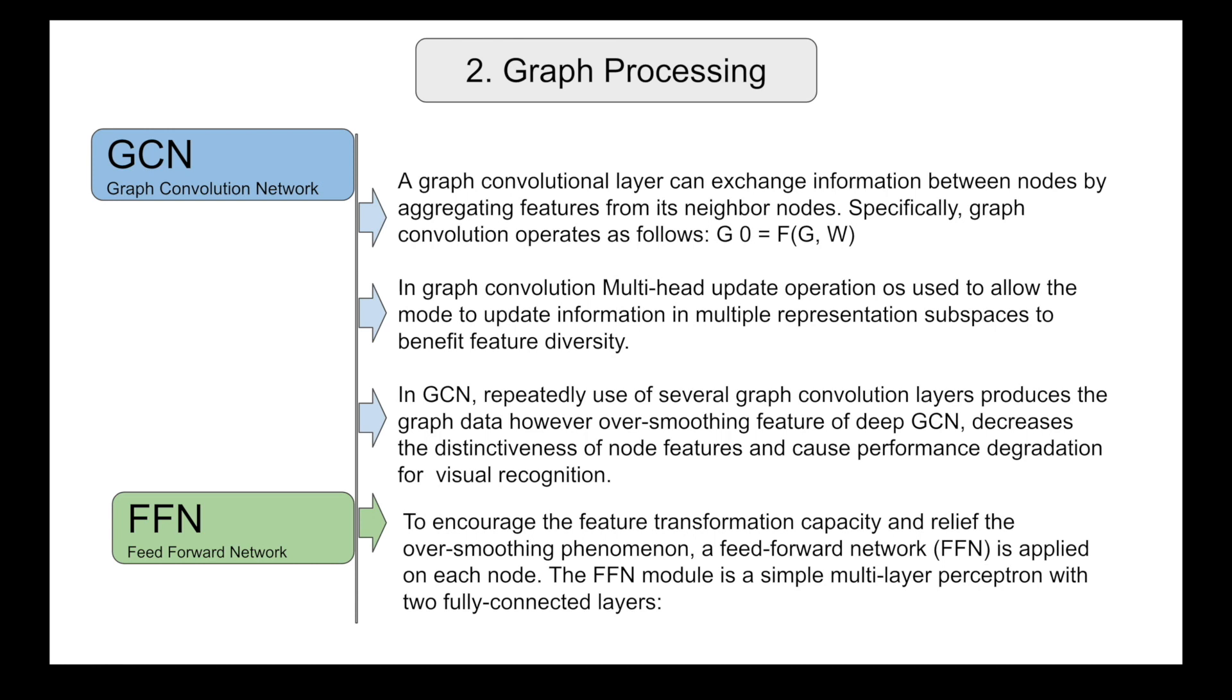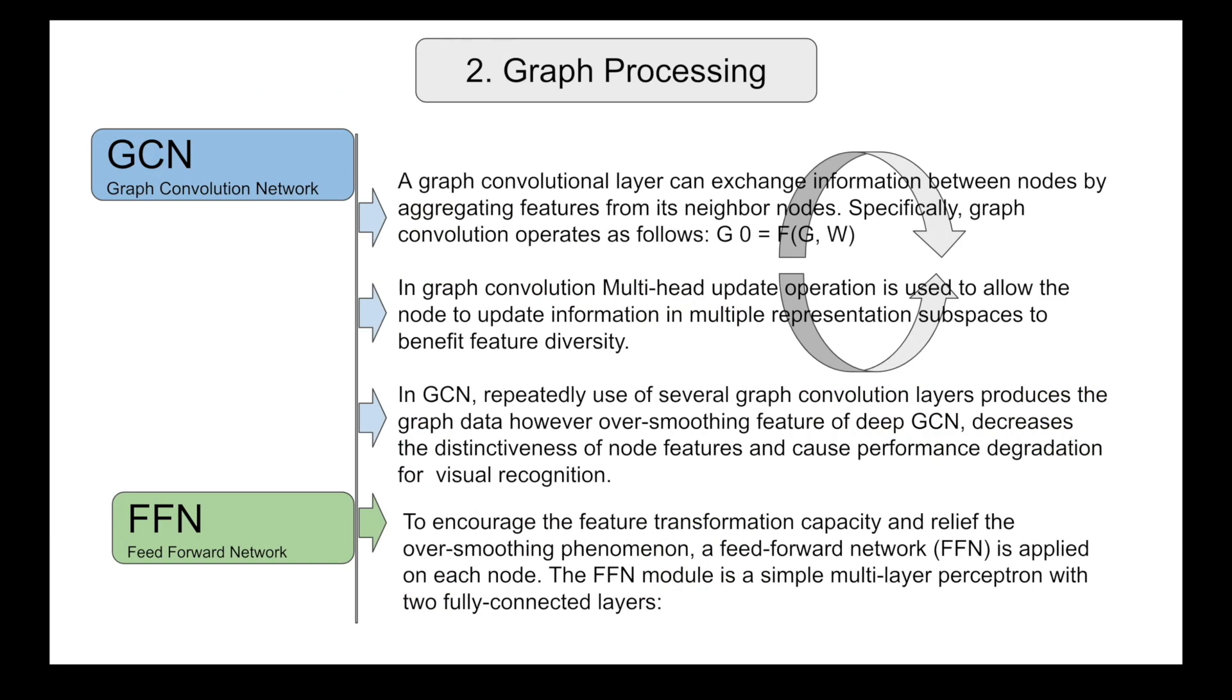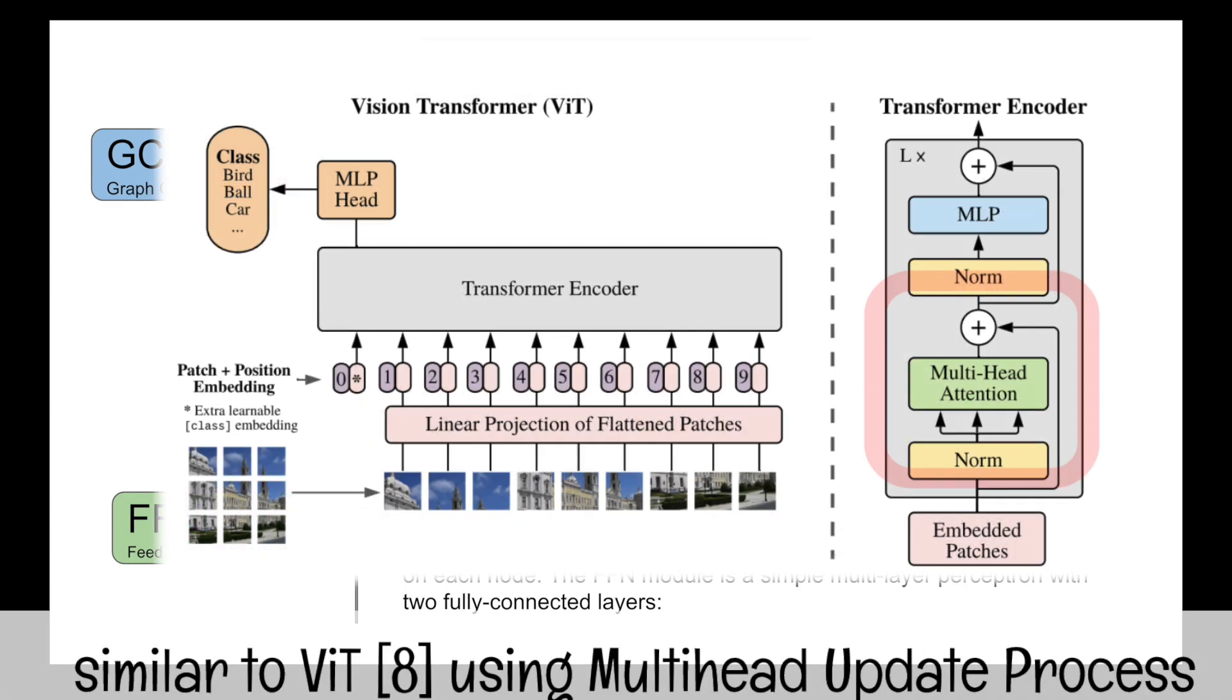The second step is graph processing. In the graph convolutional network you have nodes and neighbor nodes. So the information exchange happens between the nodes and neighbor nodes by aggregating their feature sets. And the graph convolutional network does apply something called the multi-head update operation.